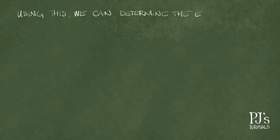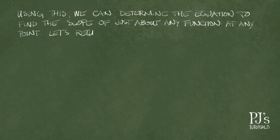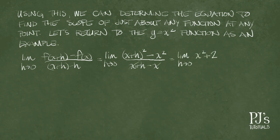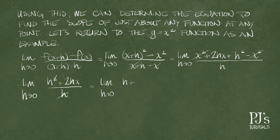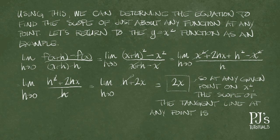Using this approach, we can determine the equation to find the slope of just about any function, provided it's continuous, at any point. Let's return to the y equals x squared function as an example. The limit as h approaches 0 of f of x plus h minus f of x over h equals, in this case, x plus h squared minus x squared all over h. And we get the result of 2x. So at any given point on x squared, the slope of the tangent line is 2x.